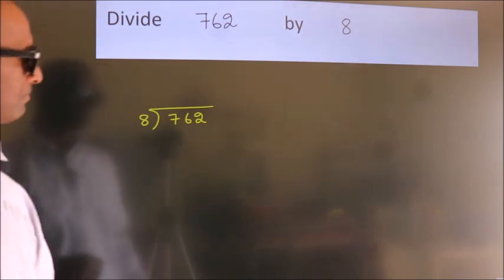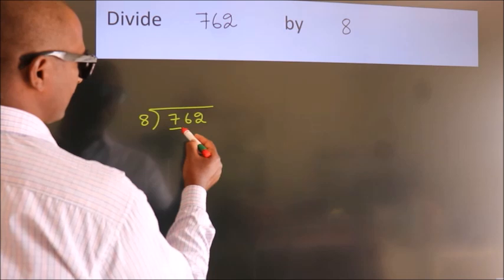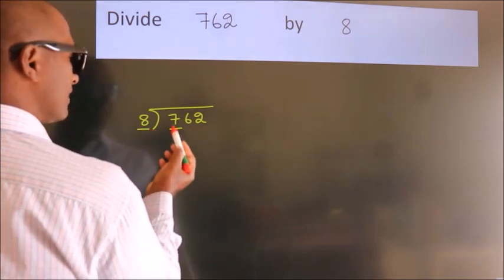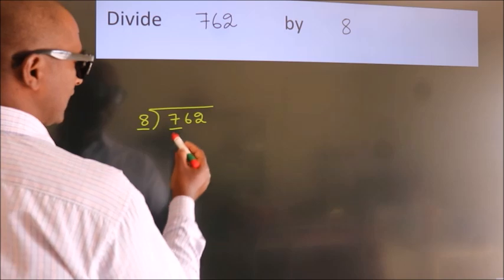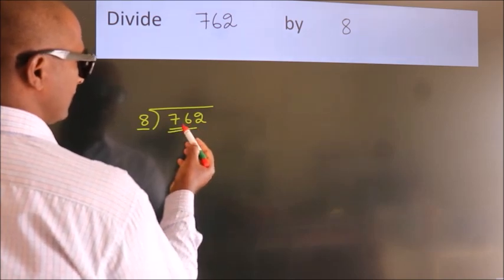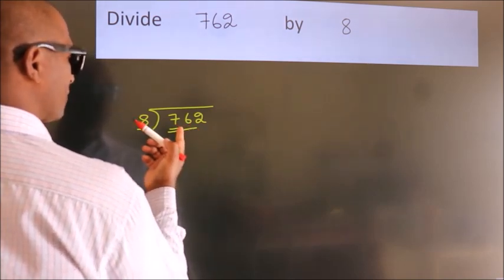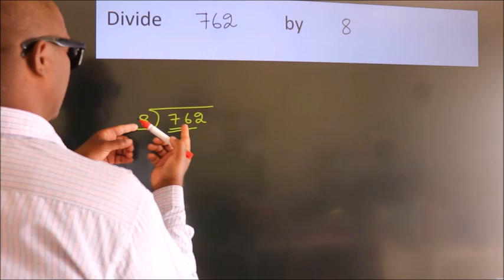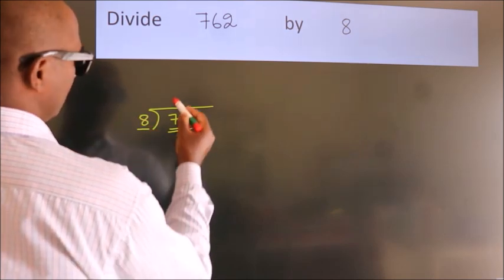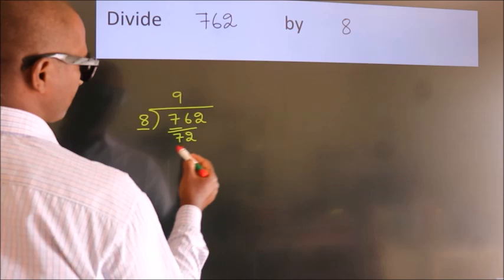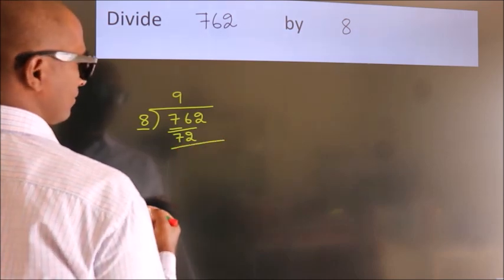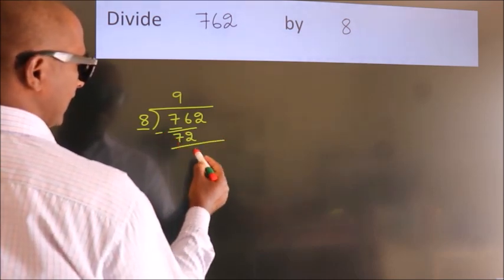Next. Here we have 7, here 8. 7 is smaller than 8, so we should take 2 numbers: 76. A number close to 76 in the 8 table is 8 nines, 72. Now we should subtract. We get 4.